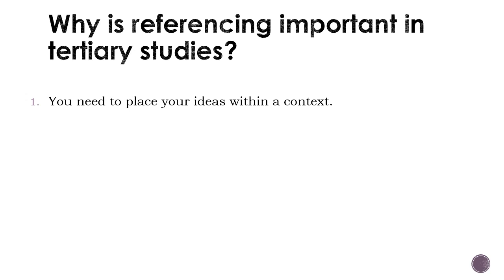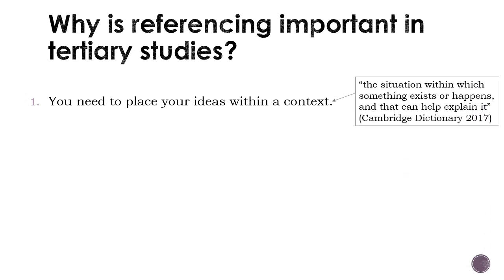What is a context? Context is defined by the Cambridge Dictionary as 'the situation within which something exists or happens and that can help explain it.' Therefore, if you are talking about homework, you would need to locate your ideas within the context or situation. For example, you might need to explain that you are talking about South Africa specifically, or perhaps a rural or urban school. You might like to explain the phase that you are talking about — for example, foundation phase or intermediate phase. All of these will give your reader information about the context.